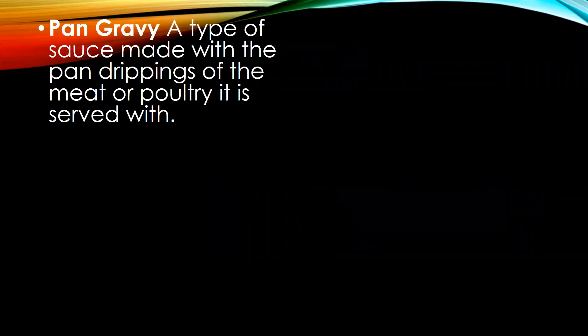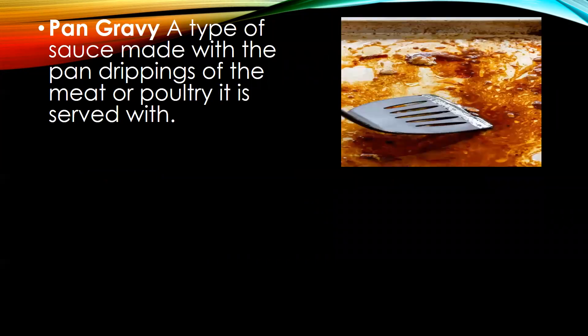The first word is pan gravy. It is a sauce made with pan drippings which get collected in the tray during roasting of meat and poultry. The drippings are diluted with the help of wine or stock, cooked further and converted to a sauce, which is known as pan gravy.